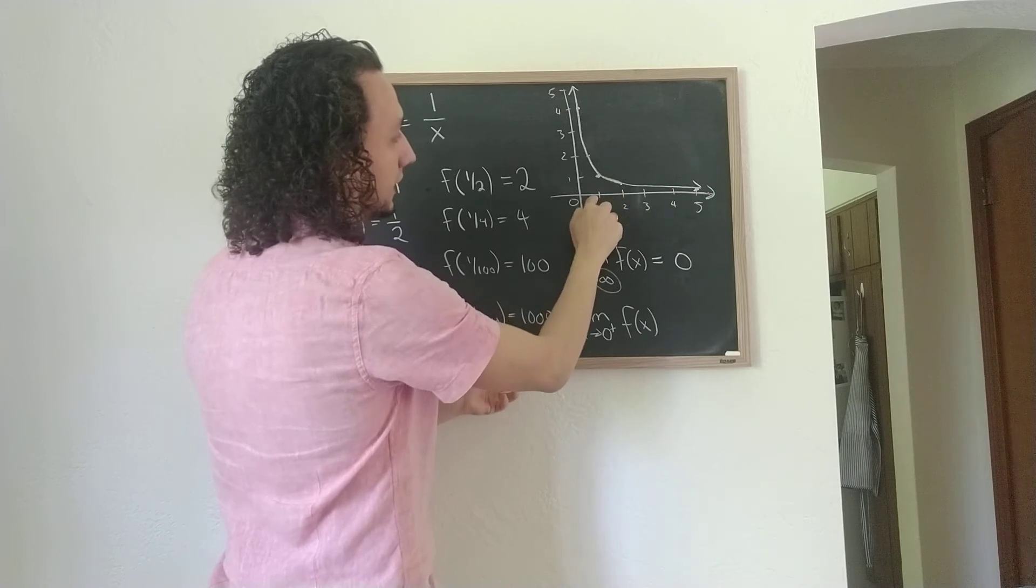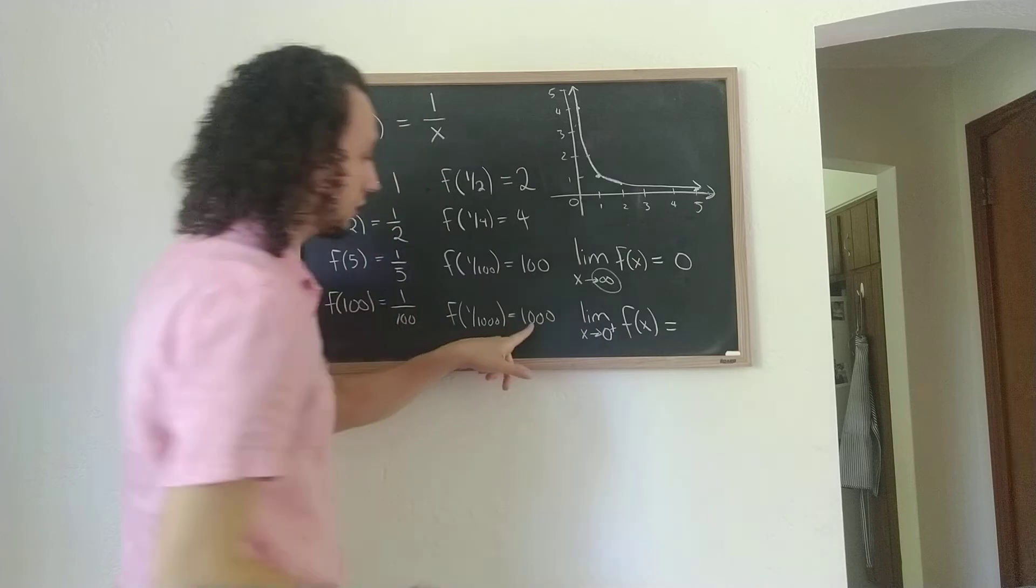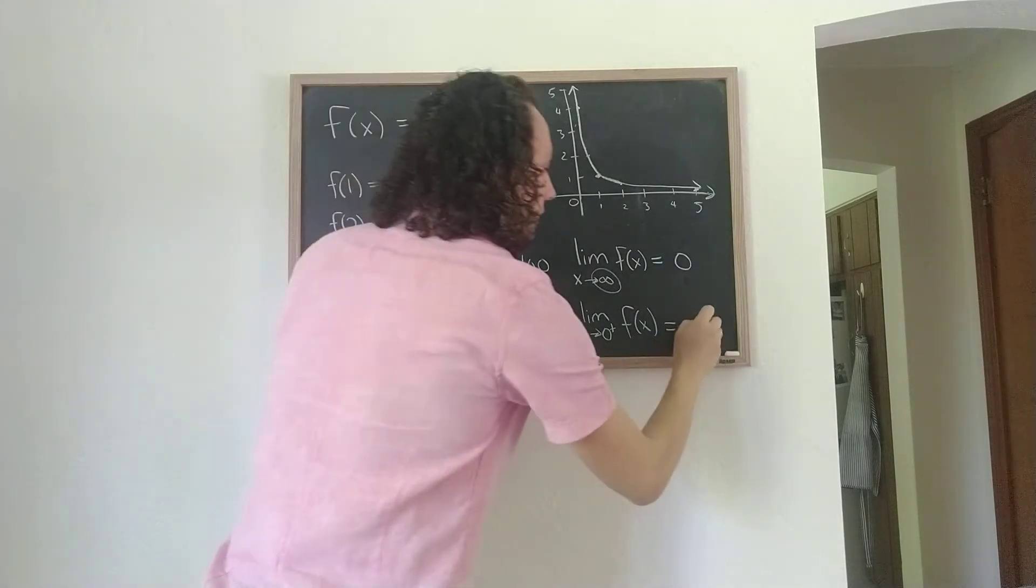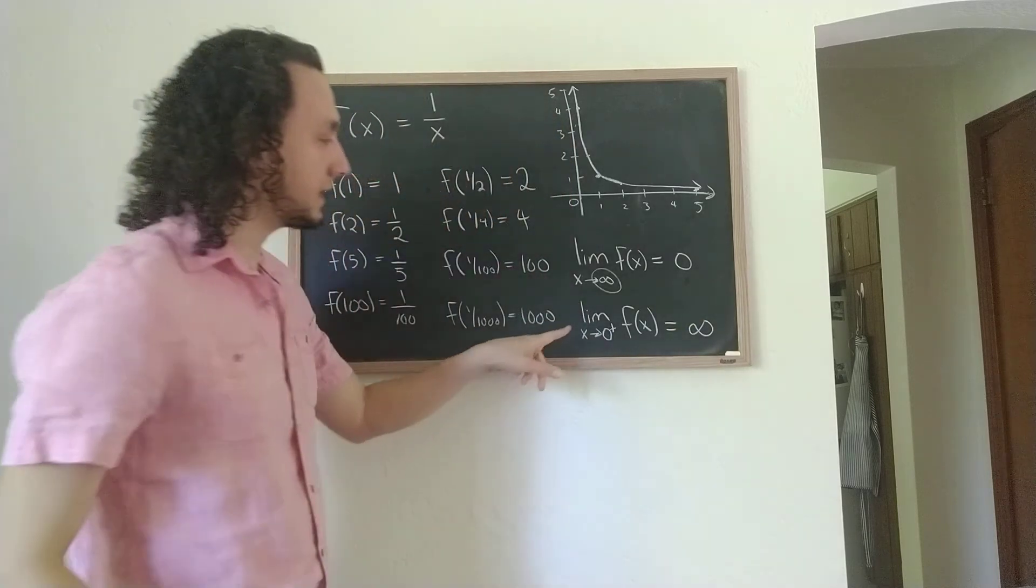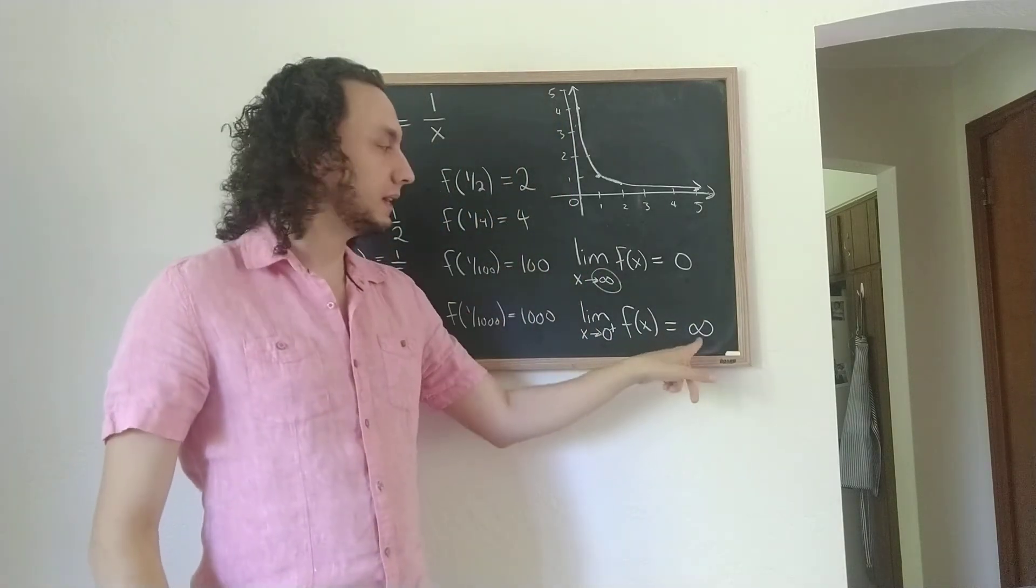But I can put smaller and smaller positive numbers into f of x. That's sort of as I get closer and closer to 0 here, and what I see is that the output gets larger and larger in an unbounded way. It gets as large as I want it to be.